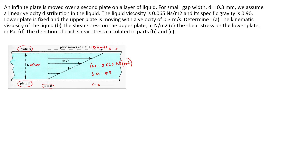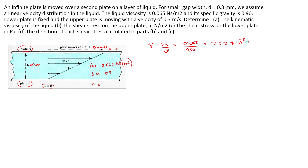First, you need to find the kinematic viscosity of the oil. The kinematic viscosity nu is given as mu divided by rho — dynamic viscosity divided by density. The dynamic viscosity is 0.065 Newton second per meter square, divided by 900, because the specific gravity is 0.9 and density equals specific gravity times 1000, giving 900 kg/m³. This gives nu equal to 7.22 into 10 raised to minus 5 meter square per second.